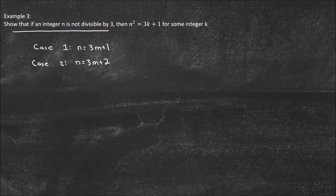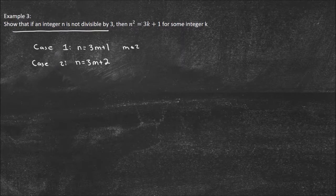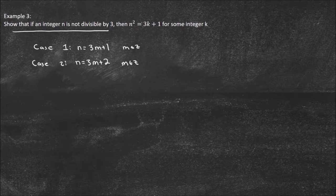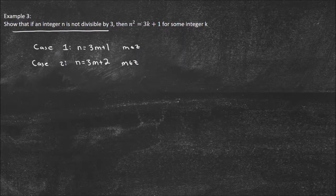Those are the only integers that are not divisible by 3. They have to be able to be written by this method, where m is an element of Z, of course, in both situations. So those are the two cases that we have to prove. We just start with that, and then we work out this problem and see what we get.